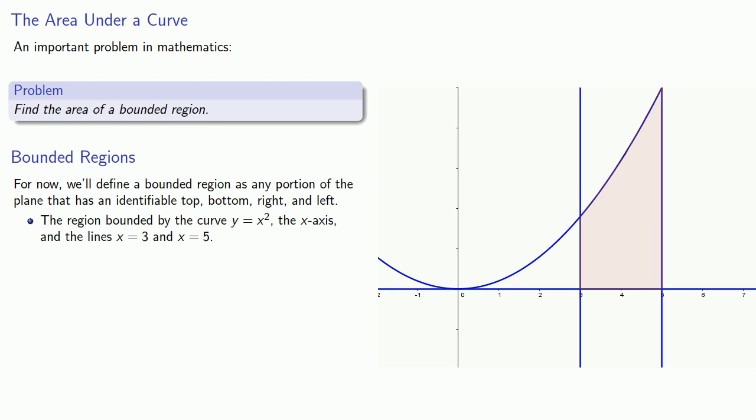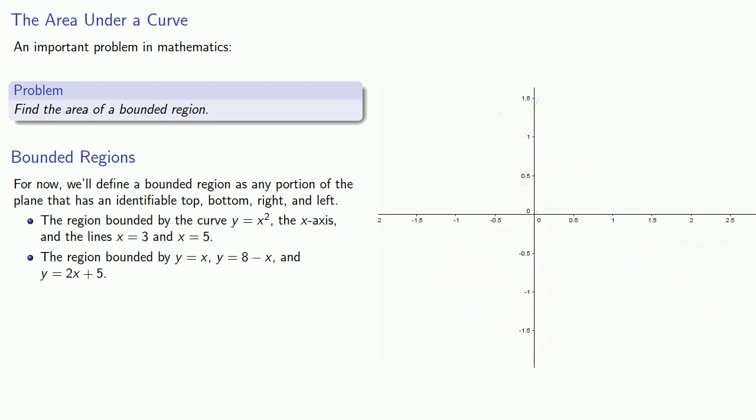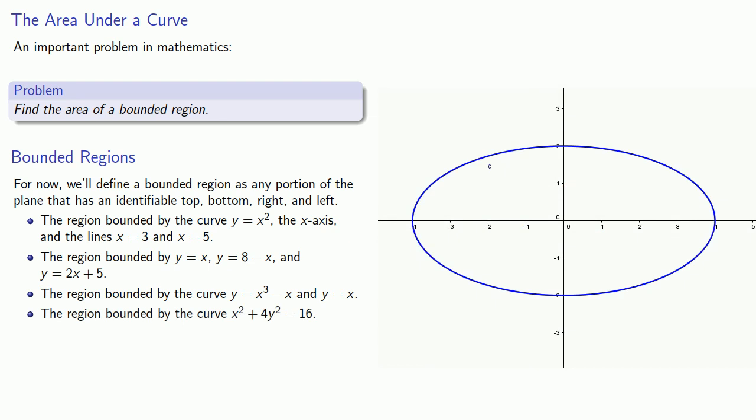However, it's not necessary that these all be curves. For example, we might have a region bounded by three curves: y equals x, 8 minus x, and 2x plus 5. Or we could have a region bounded by two curves, y equals x cubed minus x and y equals x. Or even a single curve can bound an entire region: x squared plus 4y squared equals 16.